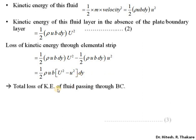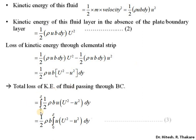The total loss of kinetic energy is obtained by integrating this differential expression within the limits zero to delta. The factor (1/2)·rho·b is constant and can be taken out of the integral sign. We can call this equation number three.